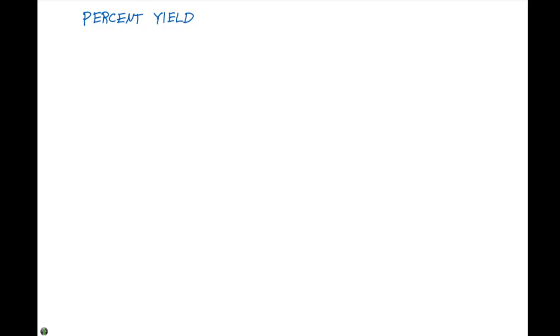The last topic we're going to tackle in this section of the textbook is called percent yield. All calculations we've performed to this point have been assuming perfect ideal conditions.